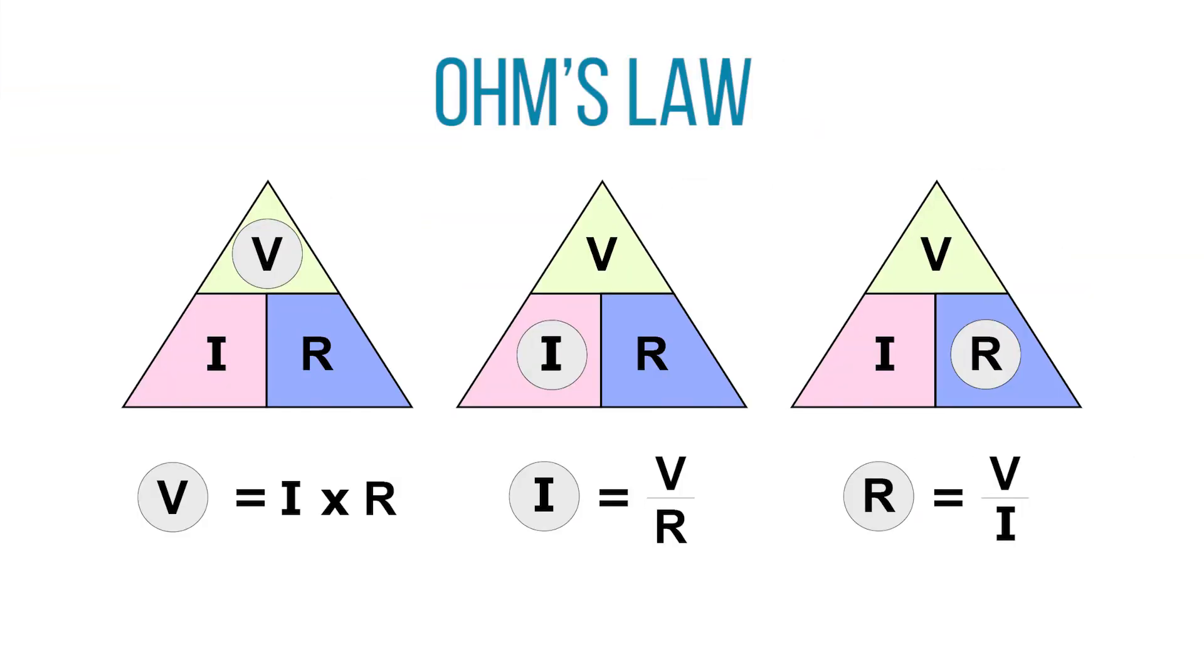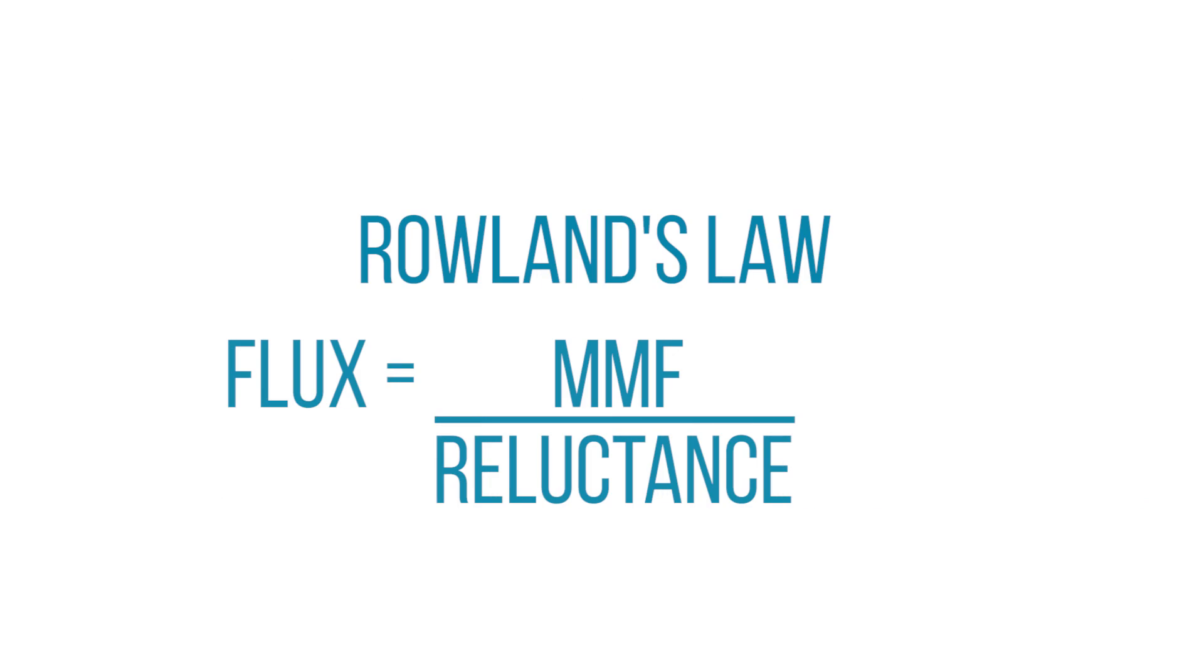We're familiar with Ohm's law for electrical circuits. For magnetic circuits, we use Rowland's law, which states that magnetic flux is directly proportional to the magnetomotive force and inversely proportional to reluctance.